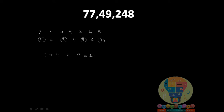Now take the even-place digits: seven, nine, and four. Seven plus nine plus four equals twenty. Check the difference: twenty one minus twenty equals one. Since one is not a multiple of eleven and not zero, this number is not divisible by eleven.